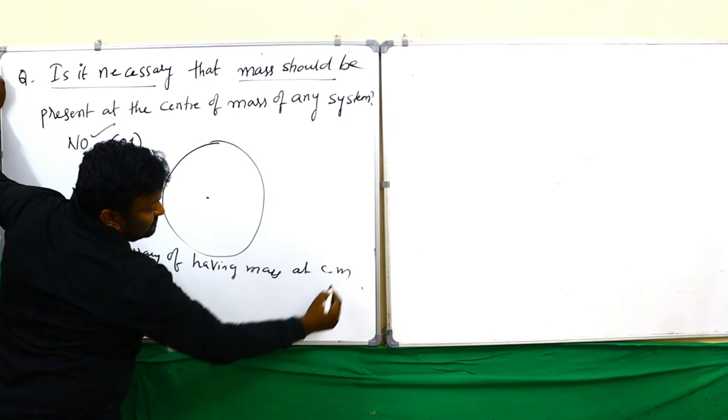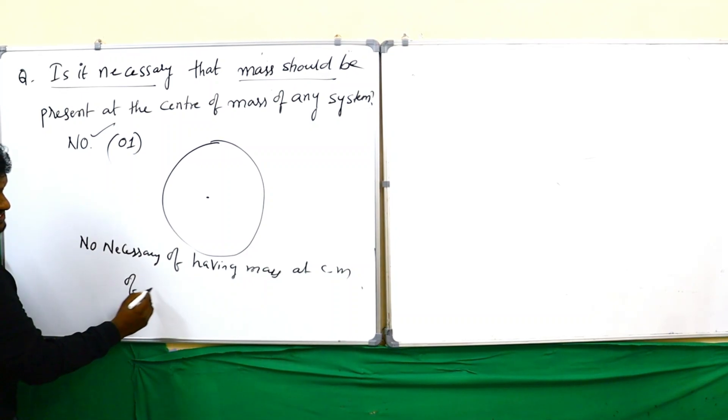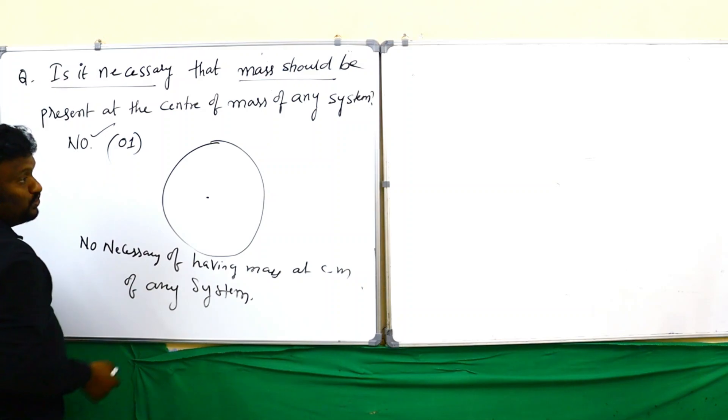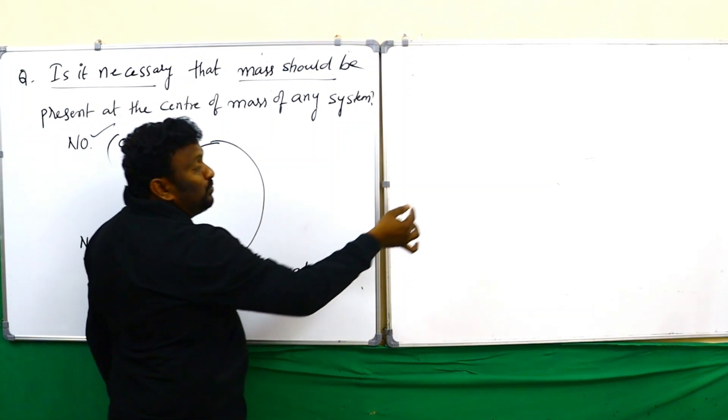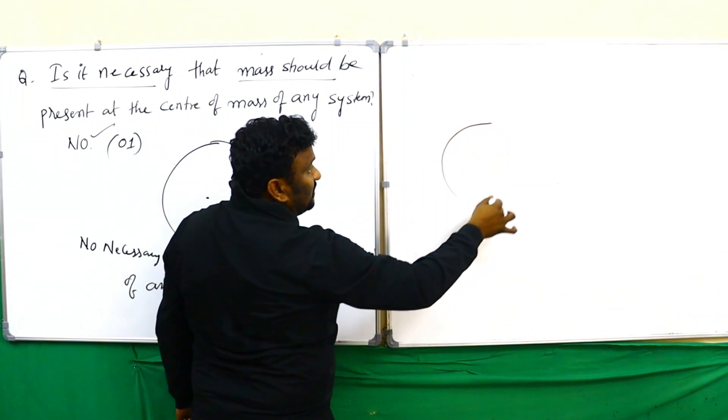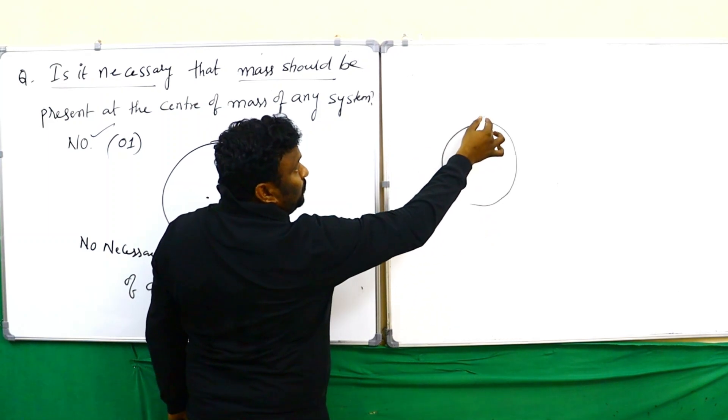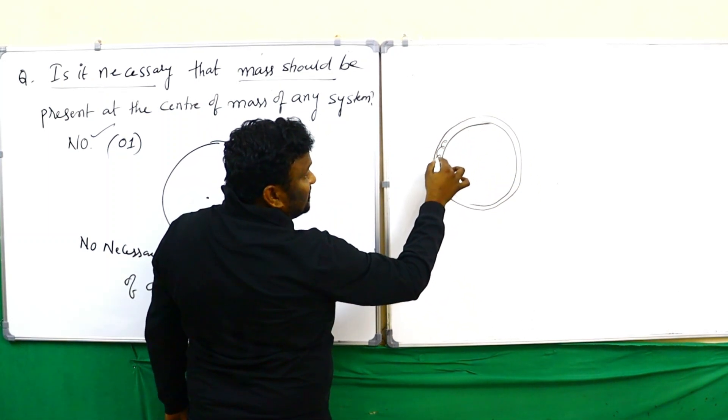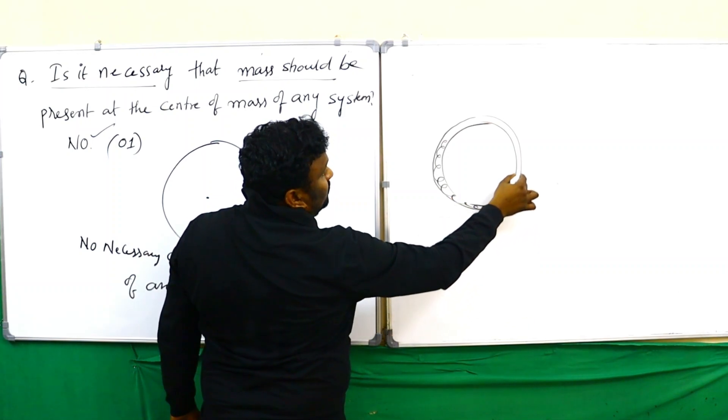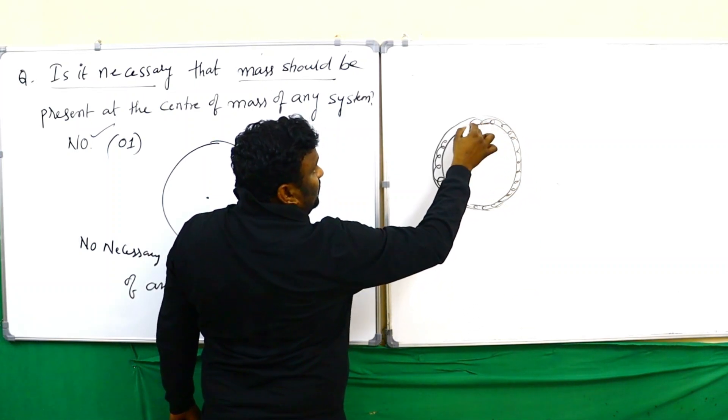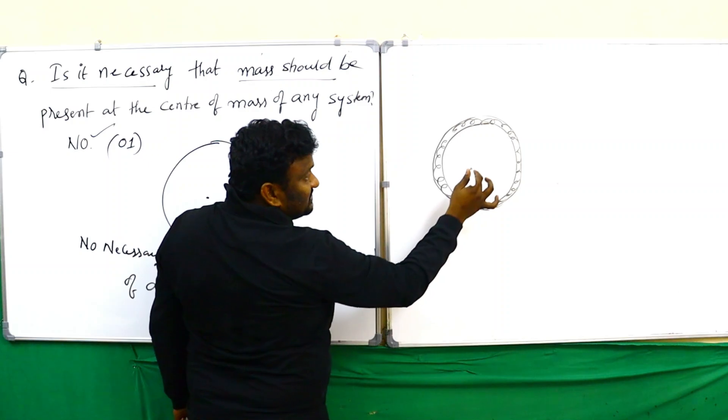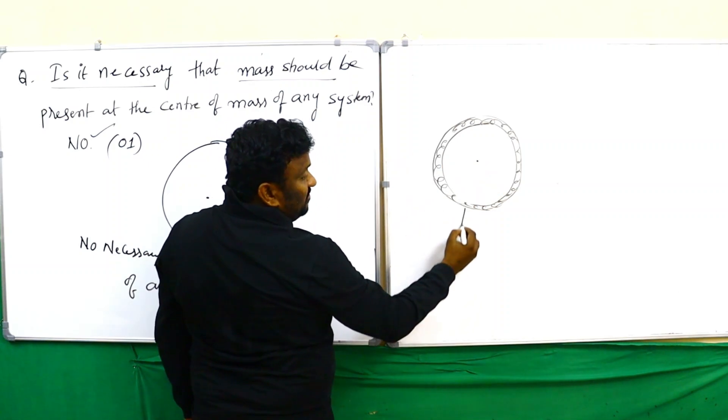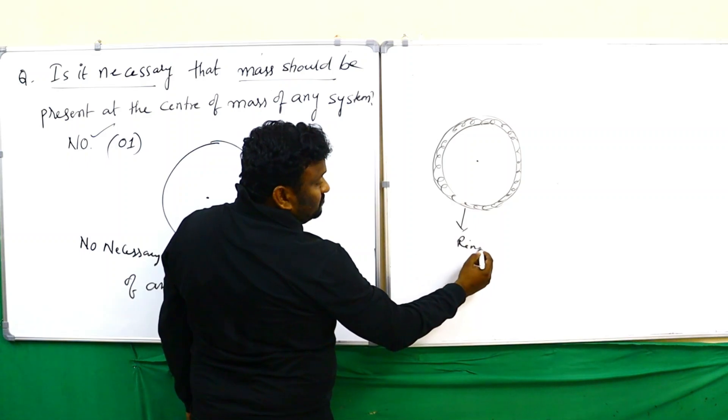For any system, take an example: a ring. In a ring, the mass is distributed around. But the center of mass is at this point.